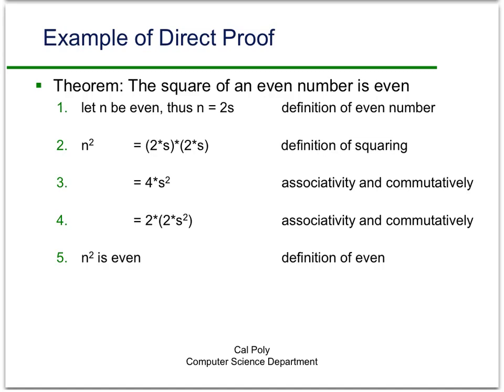And then we can factor out a 2. And we get that this is equal to 2 times 2s squared. But s is an integer, so s squared is an integer, times 2, it's still an integer. So everything here in parentheses is an integer. And so we can conclude, because n squared is 2 times an integer, that n squared is even.